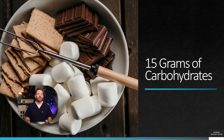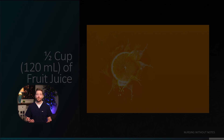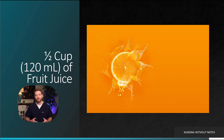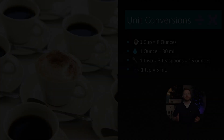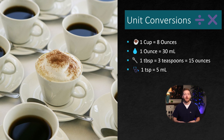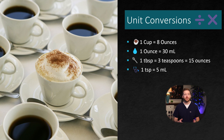Now let's dive into what 15 grams of carbs actually looks like. There are various options to choose from, and here's a list of classic examples you might encounter in healthcare orders, nursing exams, or the NCLEX. Encourage patients to keep a few of these items at home and carry them while out and about. Side note on unit conversions: one cup equals 8 ounces, one ounce equals 30 milliliters, 5 milliliters equals one teaspoon, and one tablespoon equals three teaspoons — useful for both exams and documenting intake and outputs during charting.